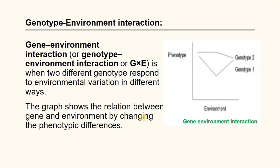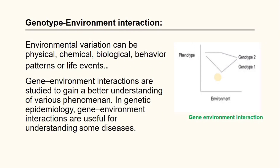Now, genotype-environment interaction. Gene-environment interaction, or genotype-environment interaction, is when two different genotypes respond to environmental variation in different ways. This graph shows the relationship between gene and environment by changing phenotypic differences. Environmental variation can be physical, chemical, biological, behavioral, or life events.